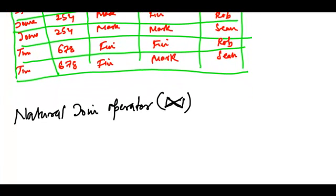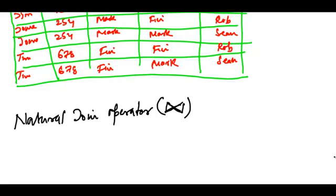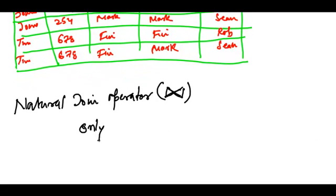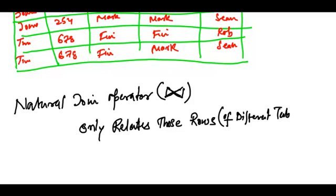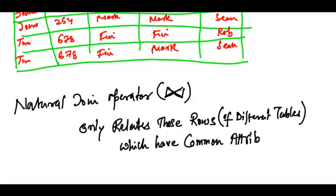What the natural join operator does is it only relates those rows of different tables which have common attribute values, or rather which have the same attribute value for the common attribute.